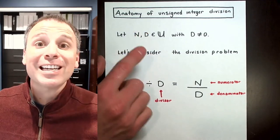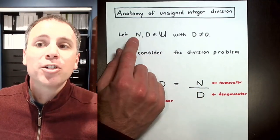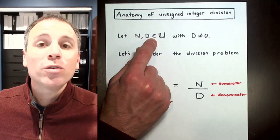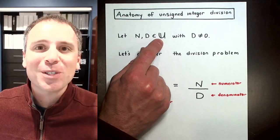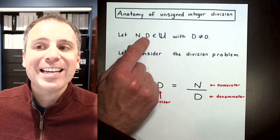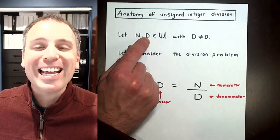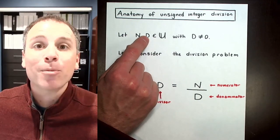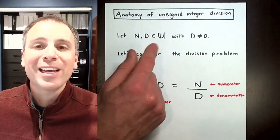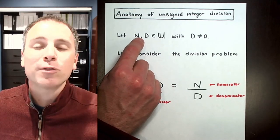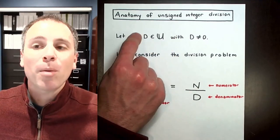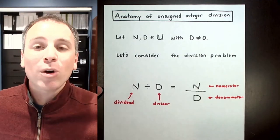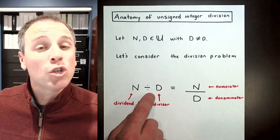We're going to talk about the anatomy of unsigned integer division. To do this, we need to start with two numbers — we'll call those capital N and capital D. Both N and D are in the set of unsigned integers, meaning they are non-negative whole numbers: the counting numbers starting at zero, one, two, three, going all the way off to infinity. We're going to set those values to be some constants, and we'll make the assumption that D is a non-zero value.